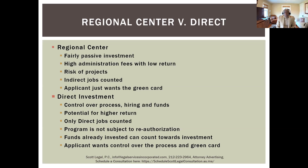Looking at the typical investor profile under each program: with the regional center, as an example, a major hotel like a Hilton chain building a large hotel might want to raise $500 million through an EB-5 program, where a number of individuals seeking green cards each invest a certain amount. With regional centers, the investments are fairly passive — the investor won't have any say or control over how Hilton builds their hotel or what they spend the money on.